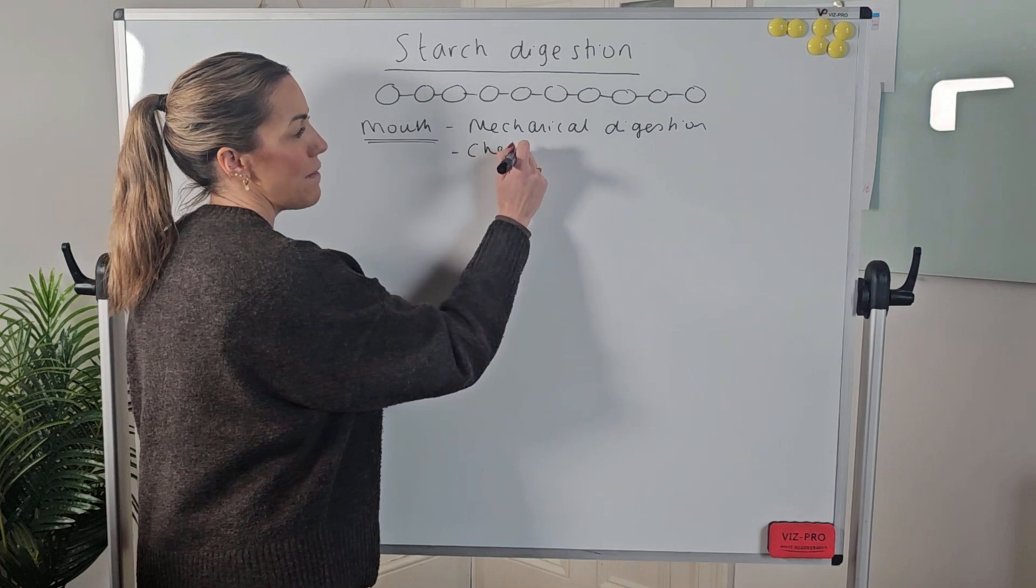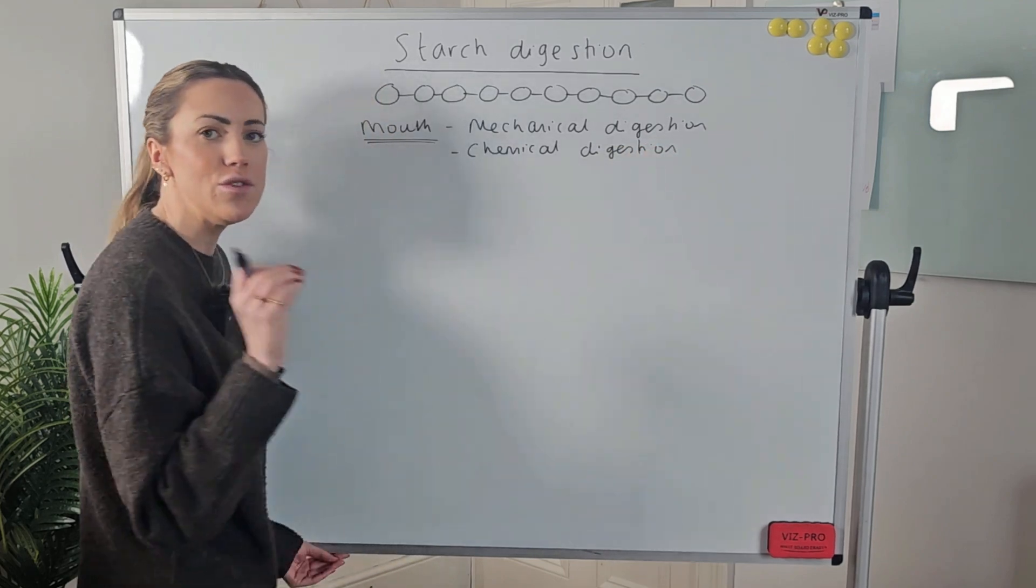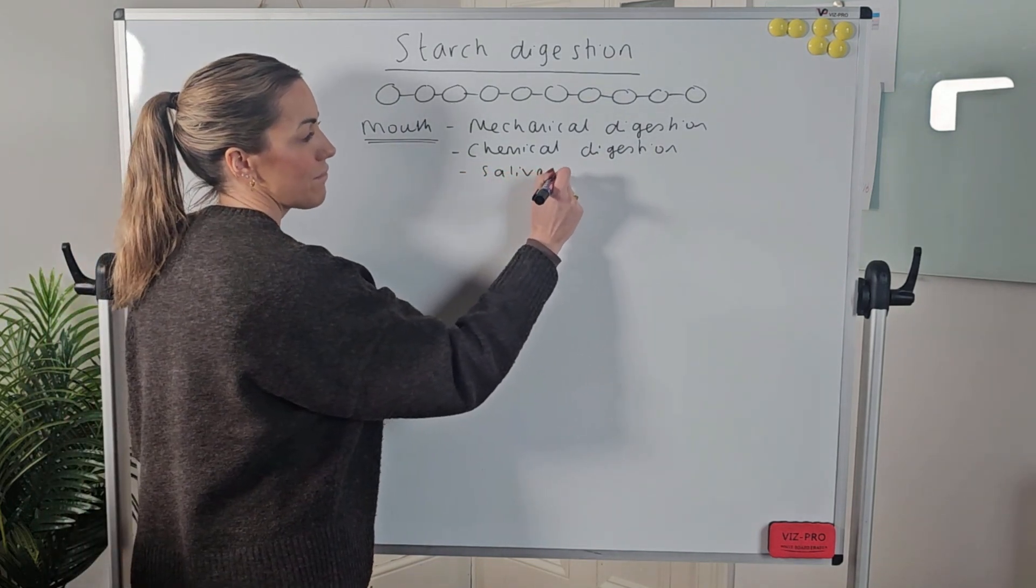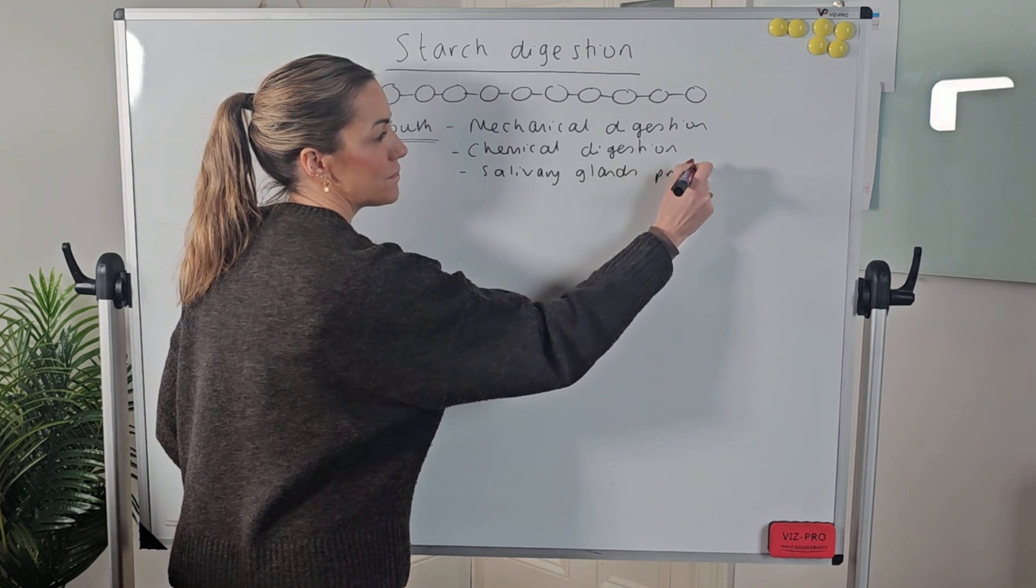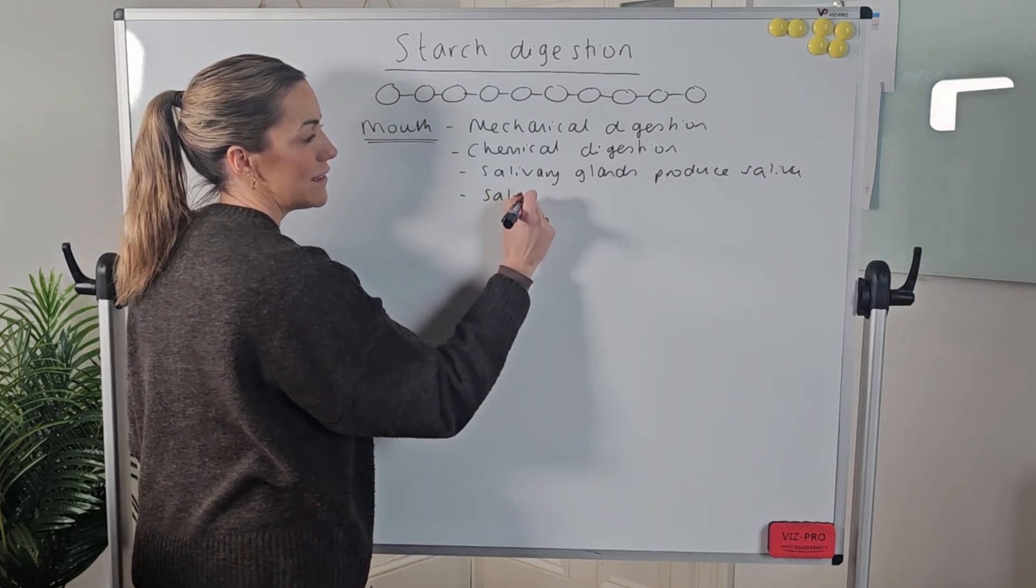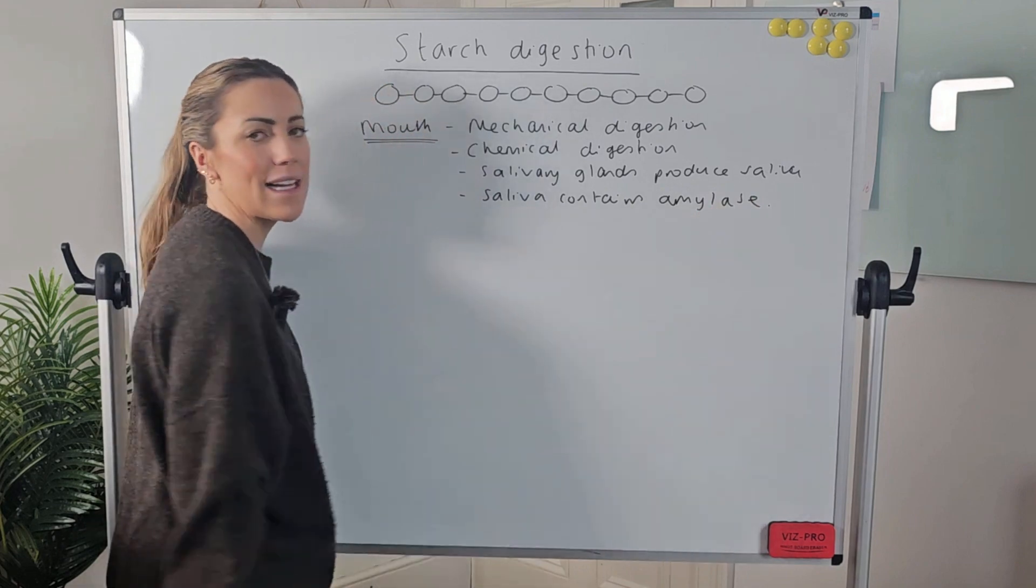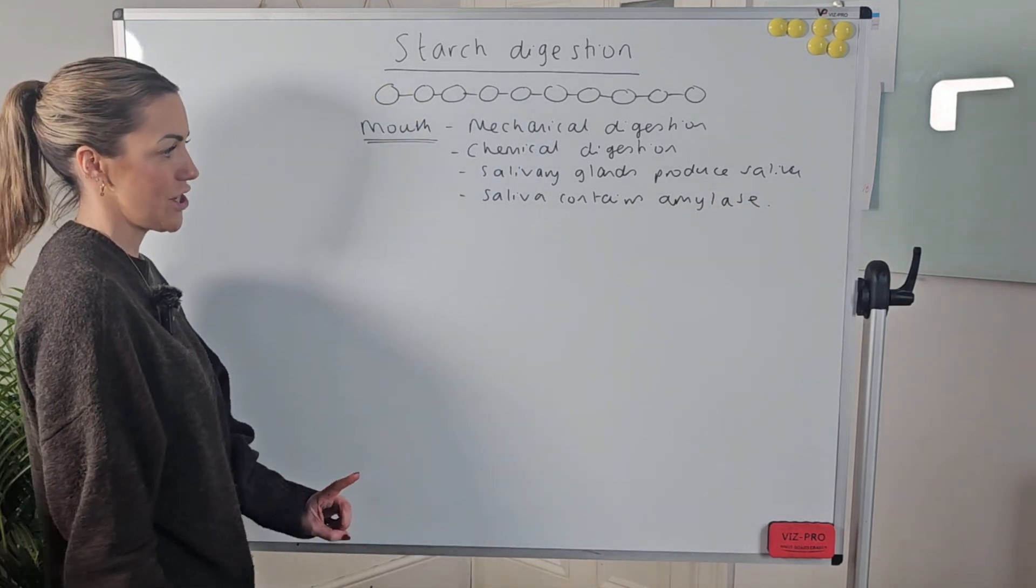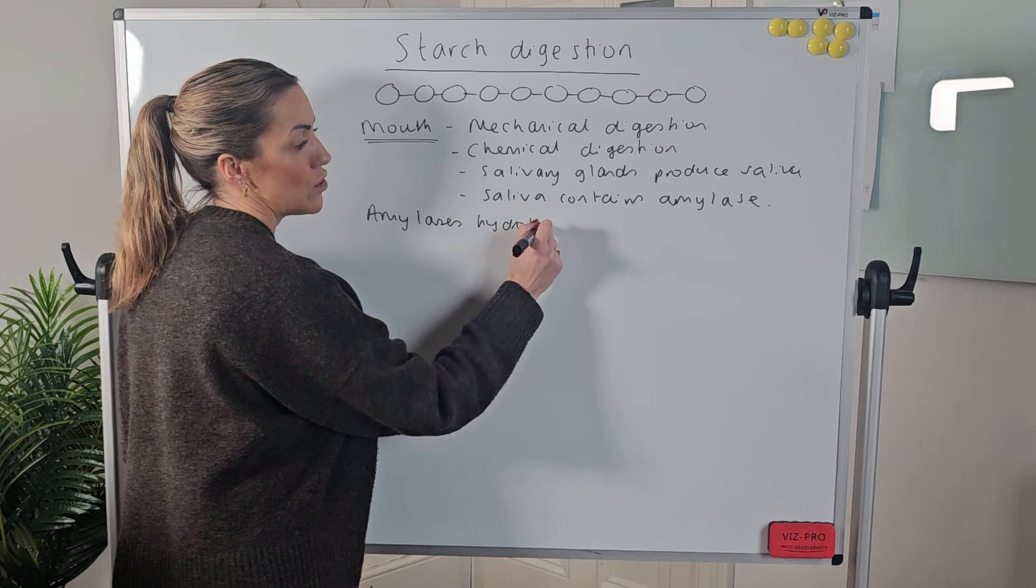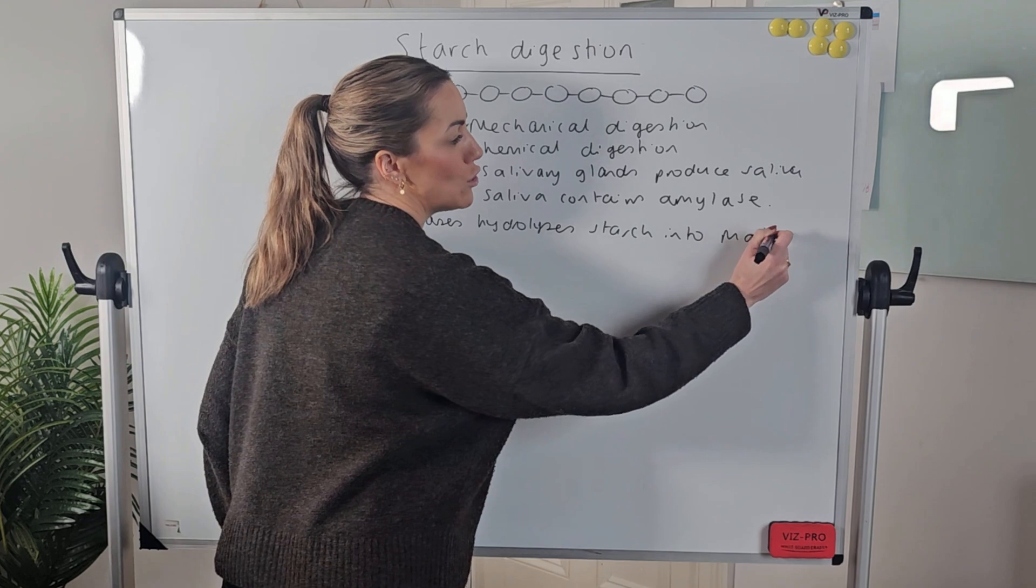And it's going to help to increase the surface area for enzyme digestion. So in the mouth, and this is what's more important for A-level, we also have chemical digestion using enzymes because our salivary glands produce saliva and saliva contains amylase. So we've got our first enzyme involved in starch digestion.